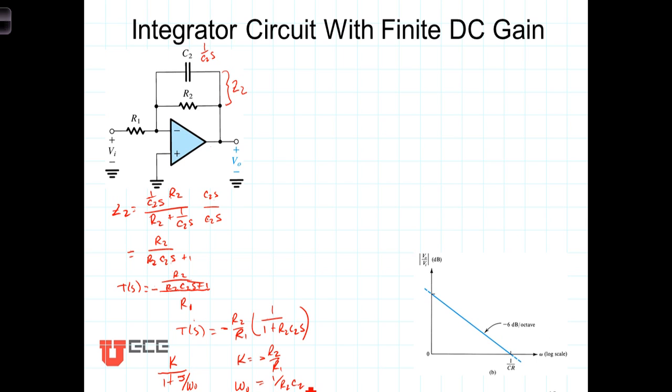Now let's explicitly show the frequency dependence of this transfer function by writing T(jω), which of course is just equal to T(S) evaluated at S equals jω. And when we do that we get that this is equal to negative R2 over R1 divided by 1 plus jω over omega-naught, the cutoff frequency, which is 1 over R2 C2.